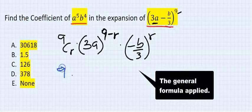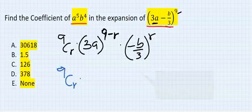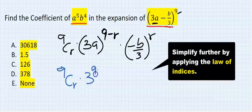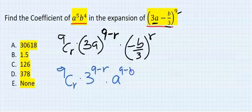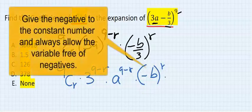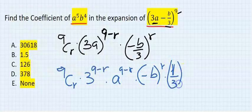9 combination r, 3 to the power of 9 minus r, a to the power of 9 minus r, minus b to the power of r, and 1 over 3 to the power of r.